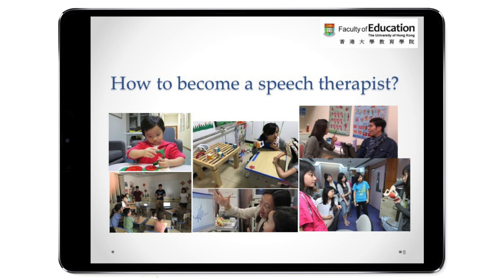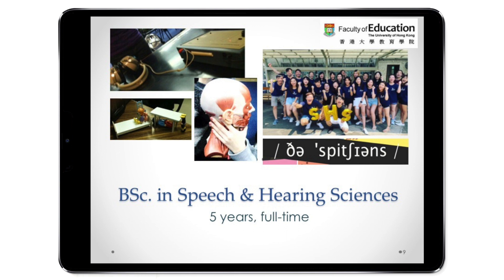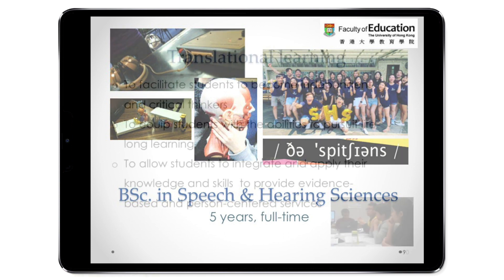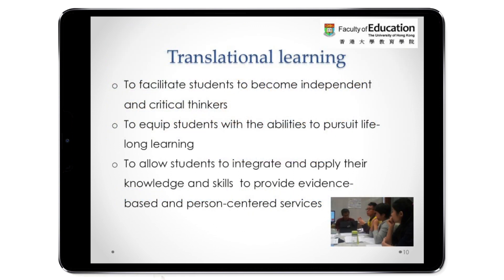If you think that speech pathology is really a profession for you, how do you become a speech-language pathologist? The Bachelor of Science program in speech and hearing sciences at the University of Hong Kong would be a right choice. This is the only undergraduate program in Hong Kong, providing five-year full-time, intensive, and systematic training. We adopt a translational learning curriculum with the goal of facilitating students to become independent and critical thinkers, equipping them with lifelong learning and the ability to provide evidence-based and person-centered services.